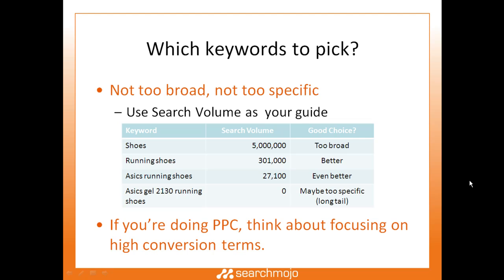If you're doing PPC, you should also think about focusing on high-conversion terms. If you know which pay-per-click terms bring lots of sales, you should consider using those keywords from an SEO perspective too, because you already know they do a good job of selling running shoes. This is a good keyword selection strategy if you have PPC data available.